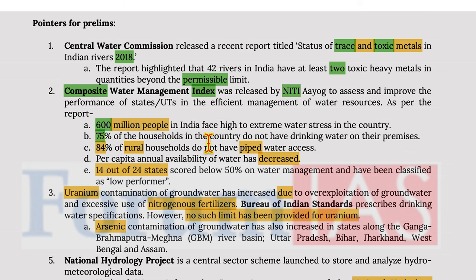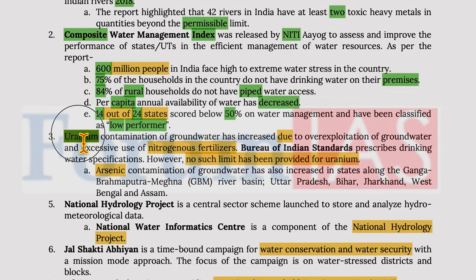75% of households in India do not have drinking water on their premises, and 84% of rural households do not have piped water access. Per capita annual availability of water has decreased, and 14 out of 24 states scored below 50% on water management, classified as low performers. Uranium contamination of groundwater has increased due to over-exploitation of groundwater and excessive use of nitrogenous fertilizers.